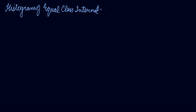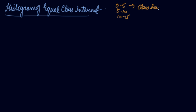Let us understand the histogram of equal class intervals first. Histograms of equal class intervals are those which are based on data which have equal class intervals — for example, 0 to 5, 5 to 10, 10 to 15. The class width is the same in all classes, that is 5, so the class intervals are equal.